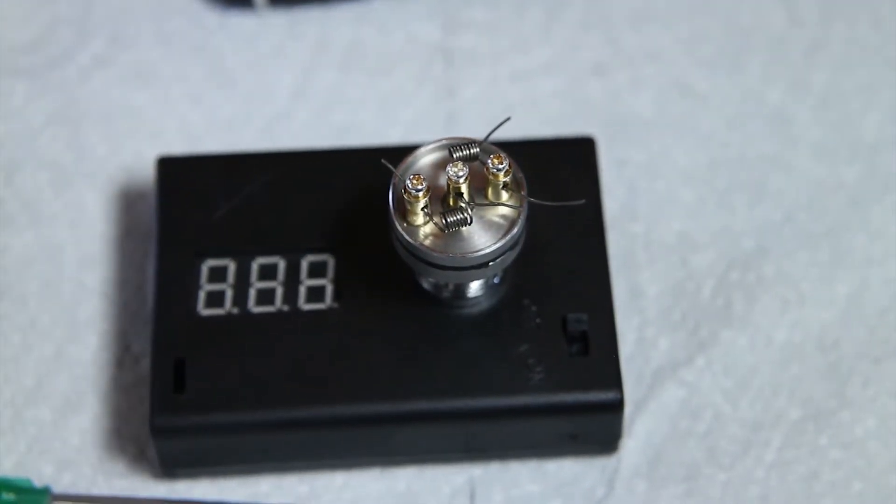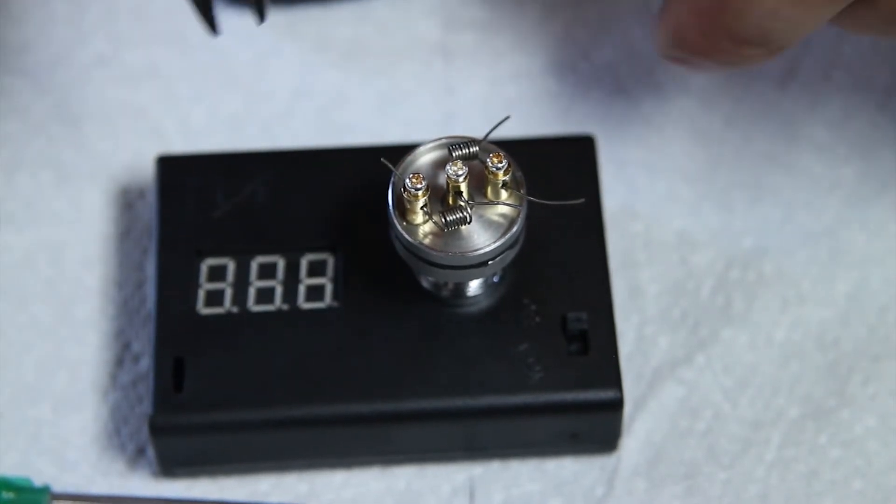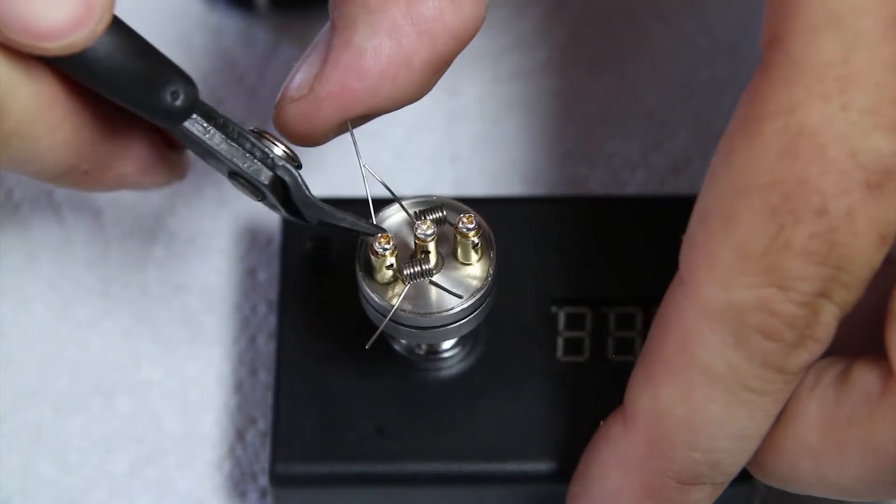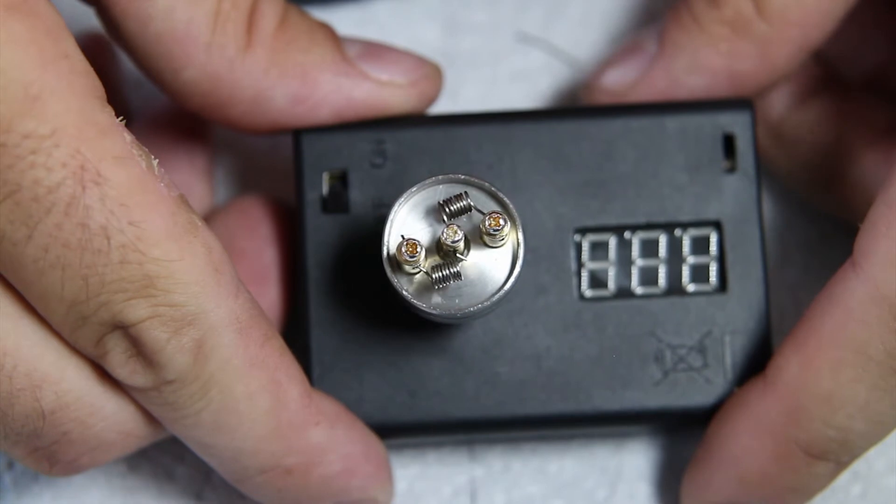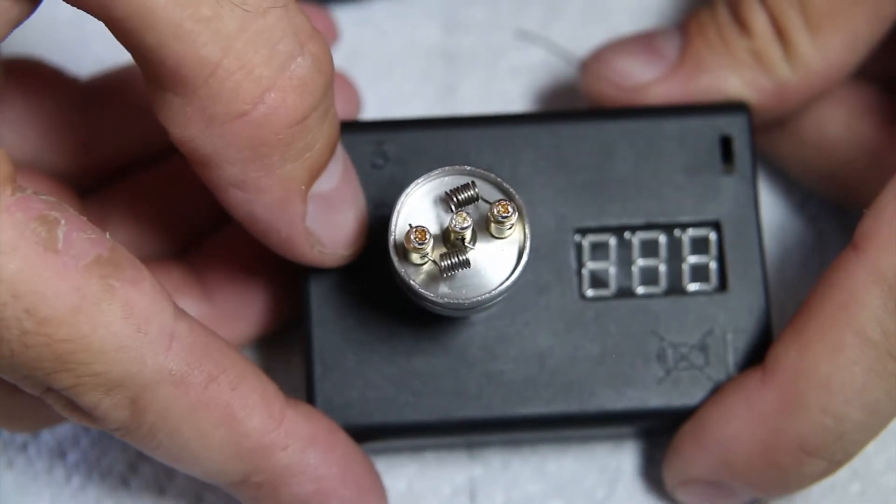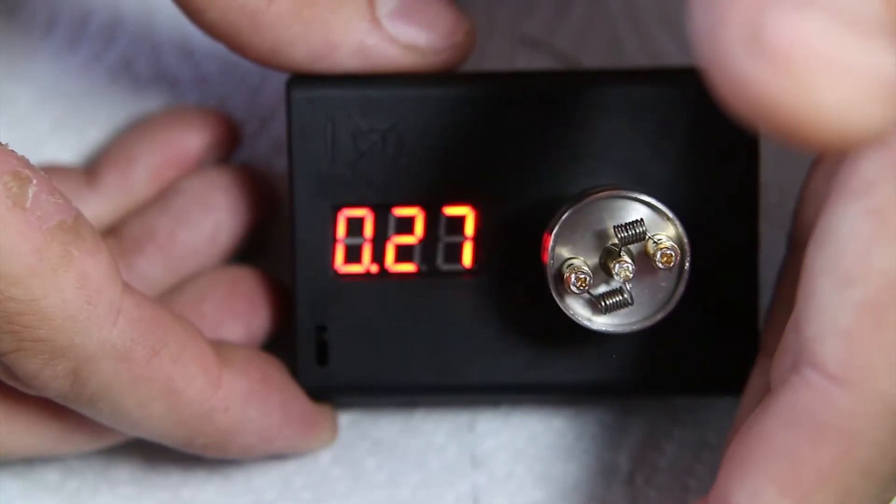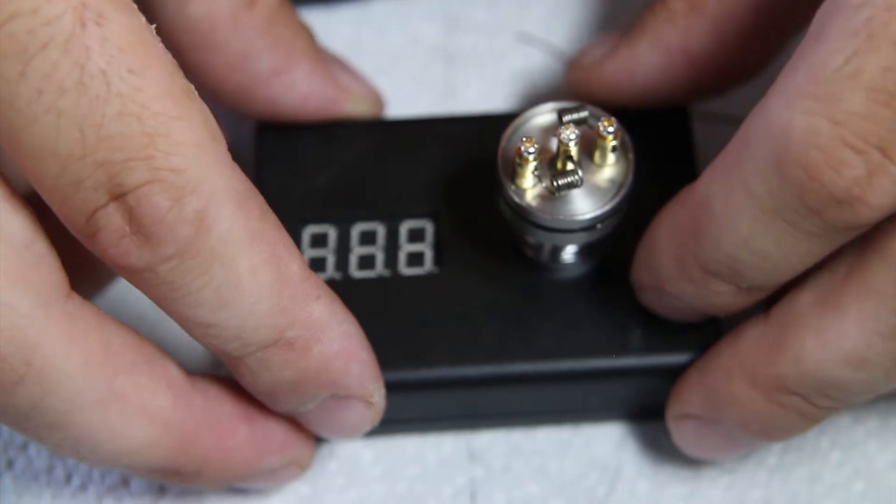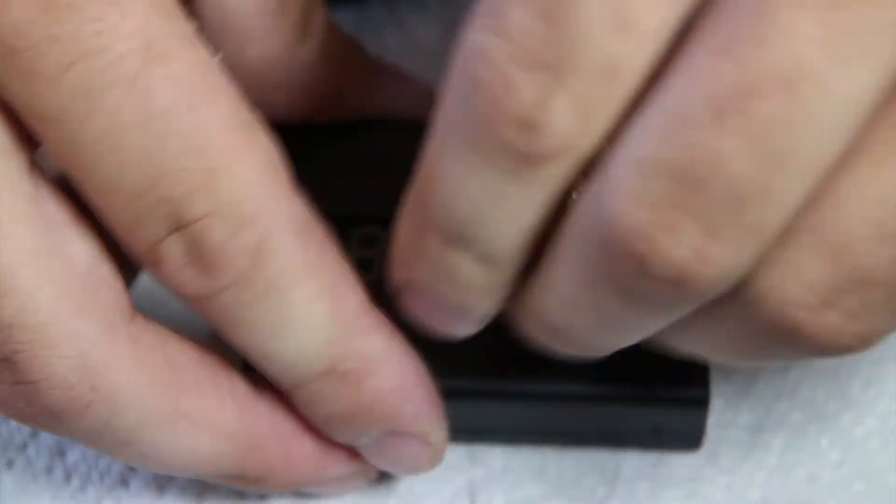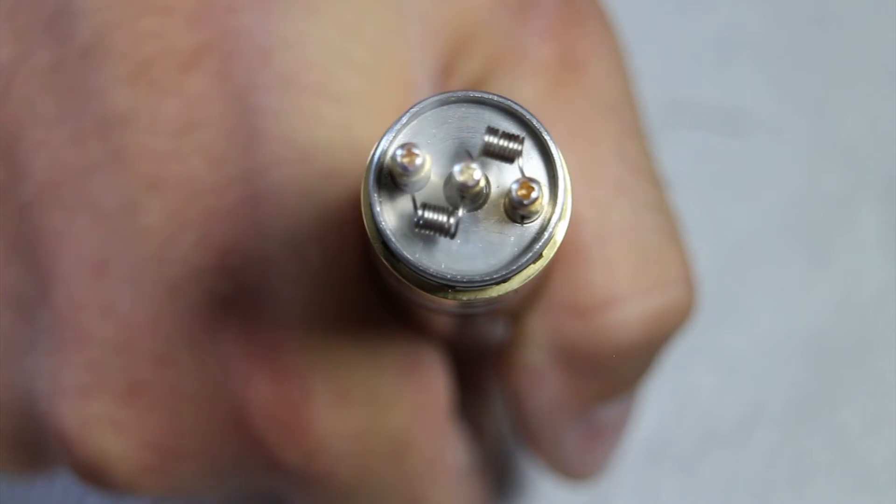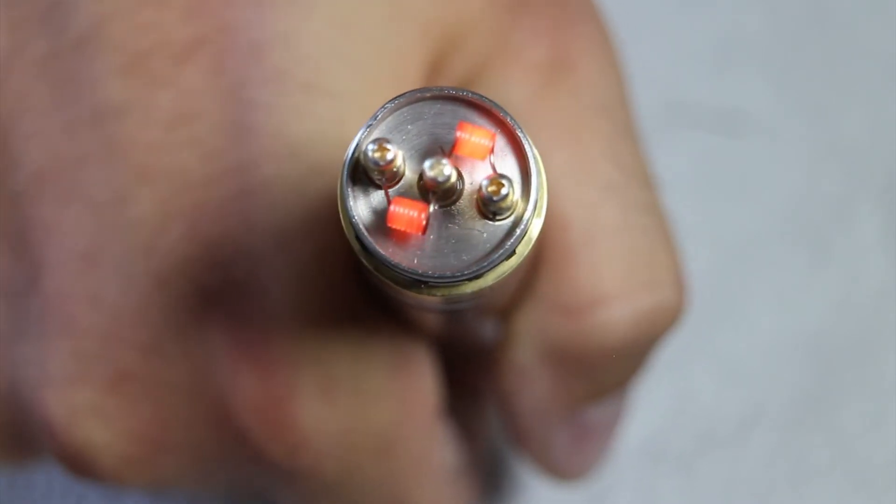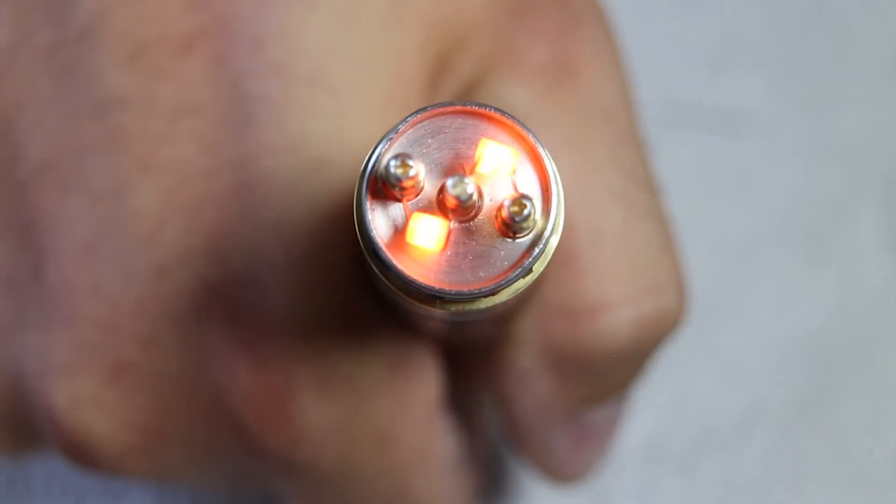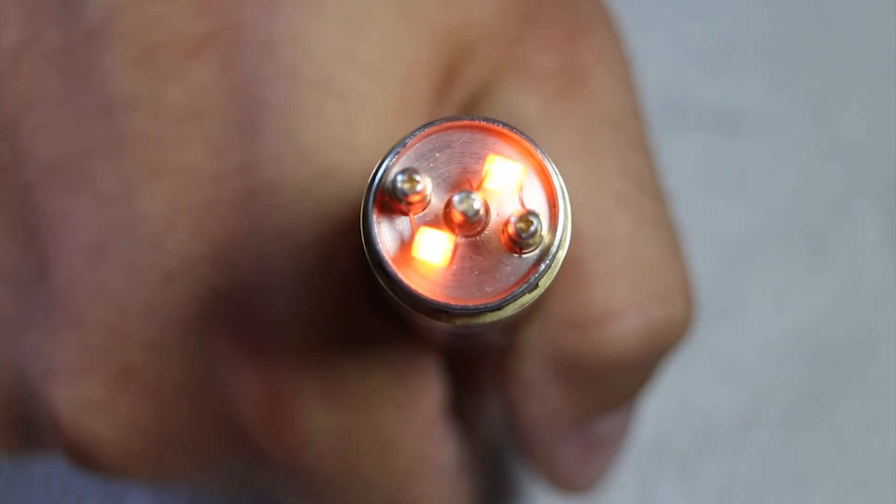Neaten up your coil a bit by just moving it with your needle. So now that our coils are looking pretty good let's just clip these extra wires and fire it up. Alright so our coils are looking pretty good let's go ahead and take a quick resistance check. 0.27 not too bad. Alright let's take it off the ohm reader put it on our mod and fire it up.